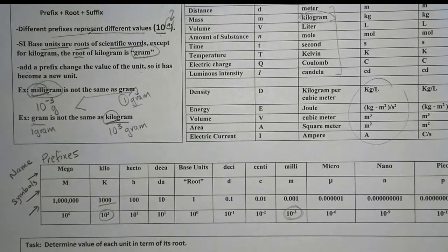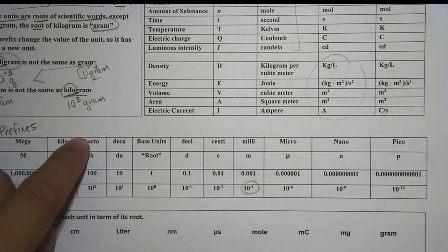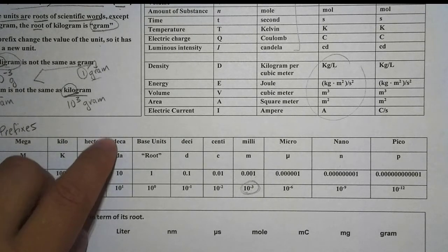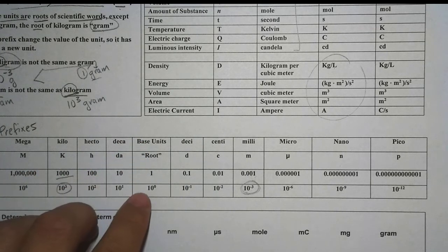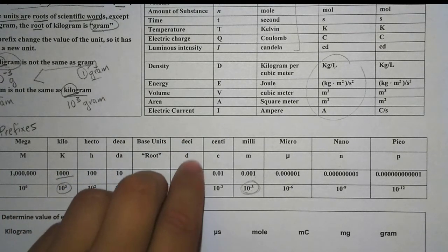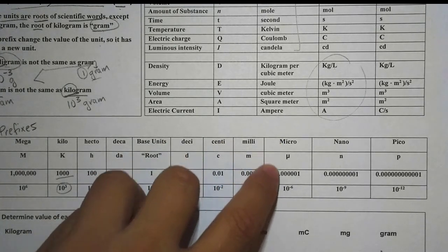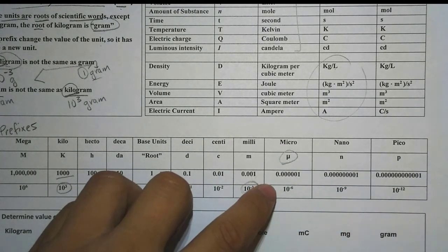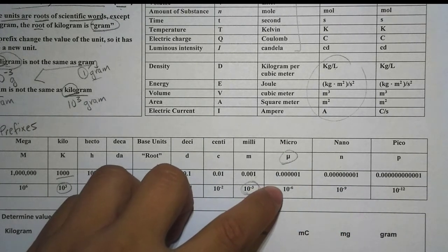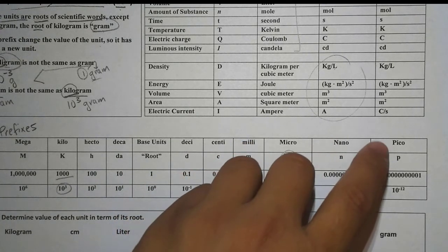Let's do some example problems, but first let's review the prefix table. We have: mega = 10 to the sixth; kilo = 10 to the third; hecto = 10 to the second; deca = 10 to the one; the base unit (the root) = 10 to the zero, and anything to the zero power equals one; deci = 10 to the negative one; centi = 10 to the negative two; milli = 10 to the negative three; micro (represented by the symbol that looks like the letter U) = 10 to the negative six; nano = 10 to the negative nine; and pico = 10 to the negative twelve.